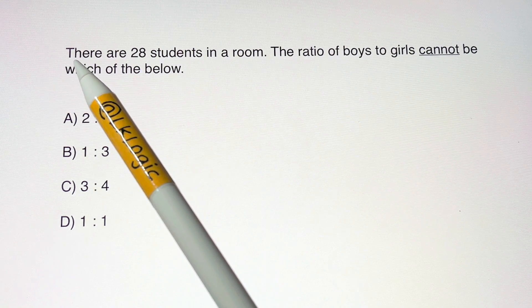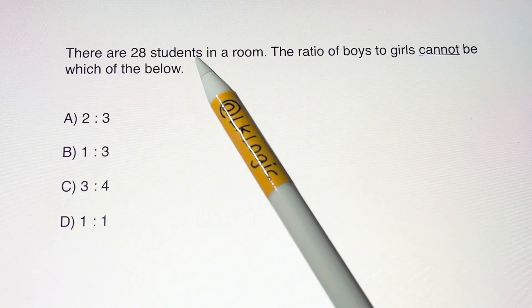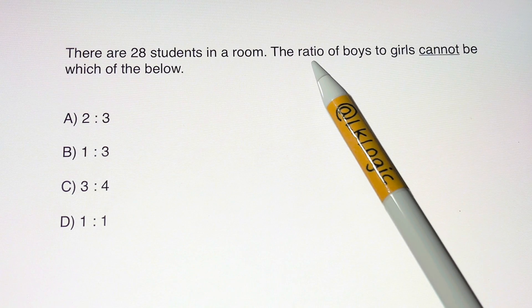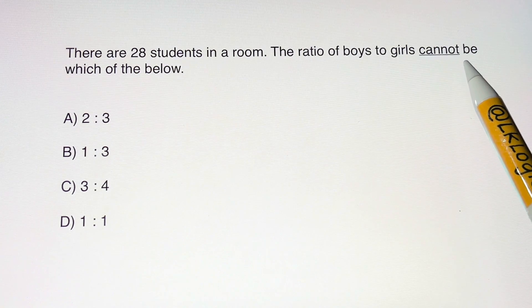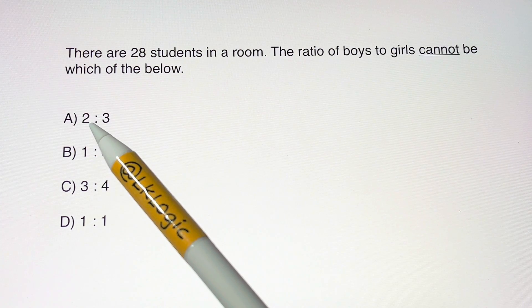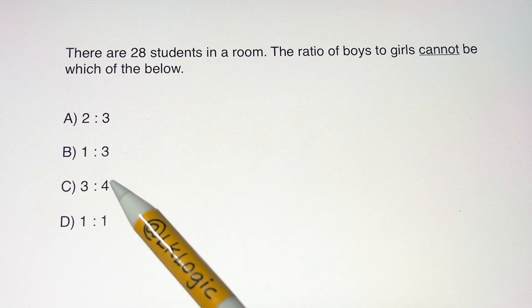Hi guys, here we have an interesting question. There are 28 students in a room. The ratio of boys to girls cannot be which of the below: 2 is to 3, 1 is to 3, 3 is to 4, or 1 is to 1?